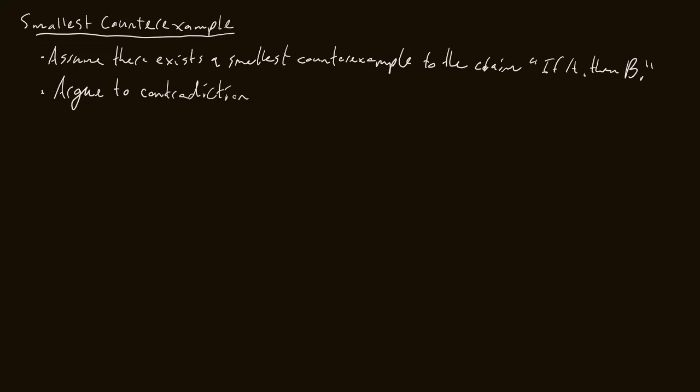Today we are going to look at a new proof technique: the smallest counterexample. The smallest counterexample is a type of proof by contradiction. So how are we going to do a proof by smallest counterexample? First, we have a claim: if A then B. And we're going to assume that there exists a smallest counterexample to the claim, and then argue towards a contradiction.